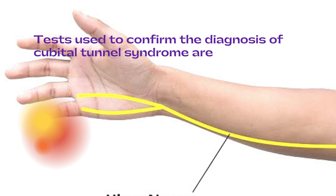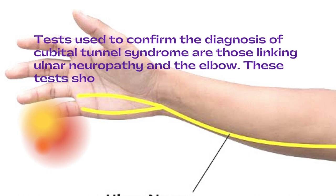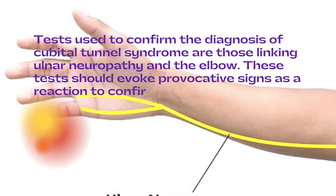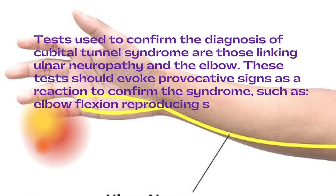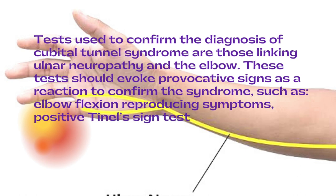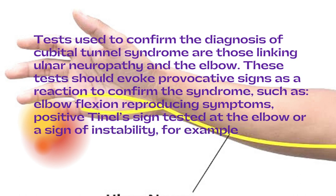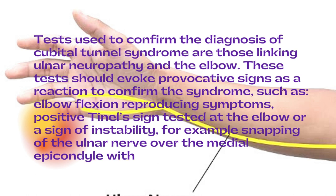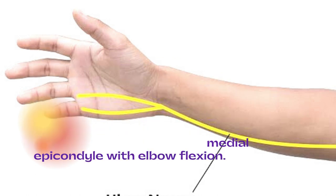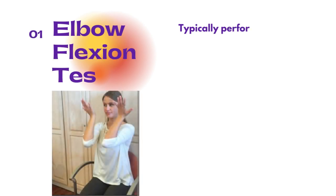After diagnosis, there come the assessment tests used to confirm the diagnosis of cubital tunnel syndrome — tests linking ulnar neuropathy and the elbow. These tests should evoke provocative signs or reproduce signs related to cubital tunnel syndrome. The first is the elbow flexion test, which reproduces symptoms. There is also the tunnel sign test, and a test for instability, such as snapping of the ulnar nerve over the medial epicondyle with elbow flexion.